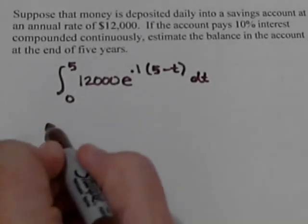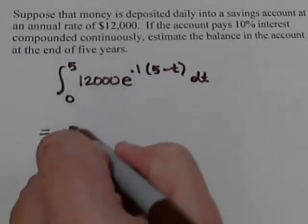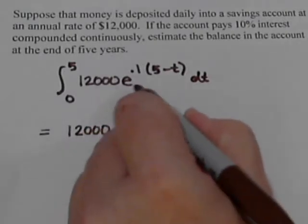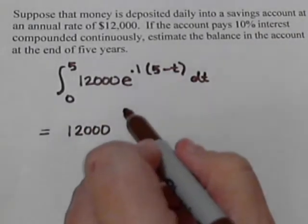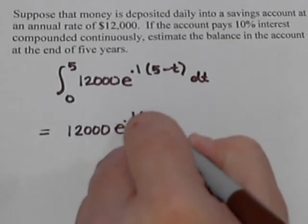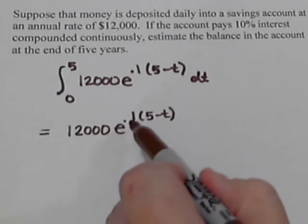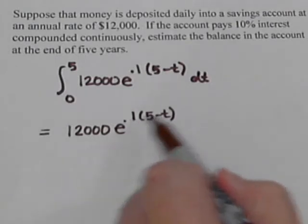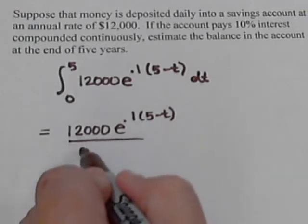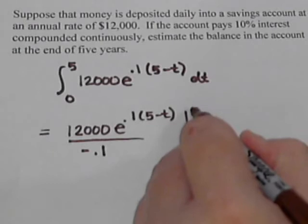So this is the integral we're going to find — let's calculate it. We can do most of this by hand. The twelve thousand is a constant, so we bring that out to the front. We have an exponential part, so that stays the same: e to the 0.1 times (5 minus t). Now that we're integrating, by the chain rule we need to divide by negative 0.1. Then we evaluate this from zero to five.